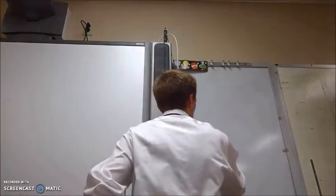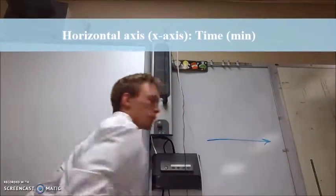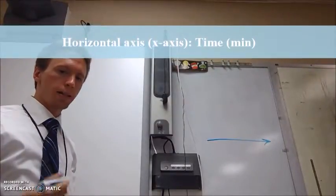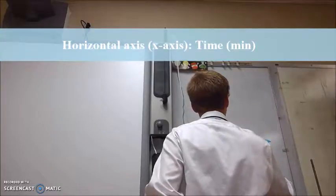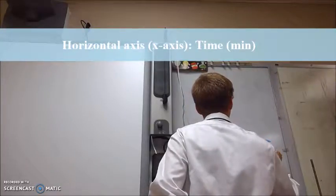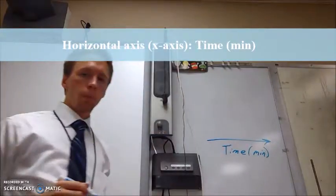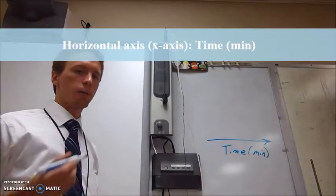Once you've collected all of your temperature data over time, you're going to end up making a scatter plot of your data. On the horizontal axis, or the x-axis, that will be your time. Make sure to label that you are measuring your time in minutes.